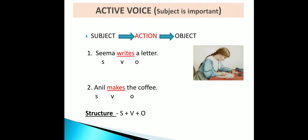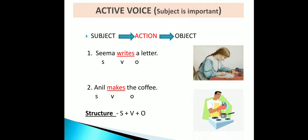See the second example: 'Anil makes the coffee.' Here, Anil is the performer who is performing the action of making the coffee. The structure of active voice is: subject + verb + object.